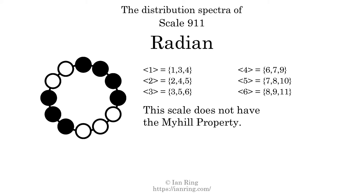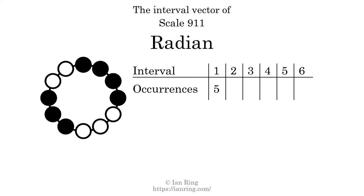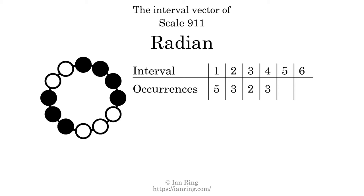The interval vector of a scale is a description of what intervals exist between its tones. There are 5 intervals with the size of 1 semitone, 3 intervals with the size of 2 semitones, 2 intervals with the size of 3 semitones, 3 intervals with the size of 4 semitones, 5 intervals with the size of 5 semitones, and 3 intervals with the size of 6 semitones.